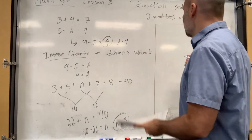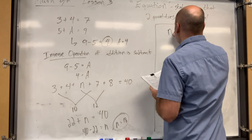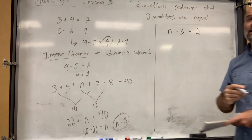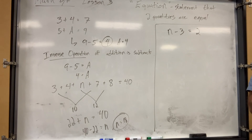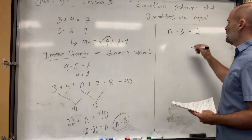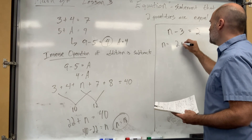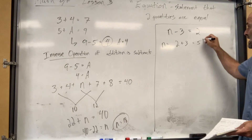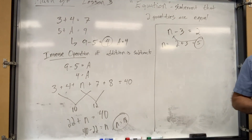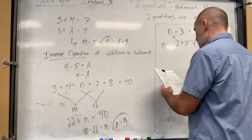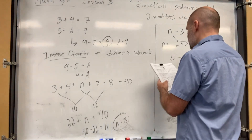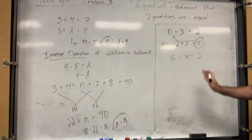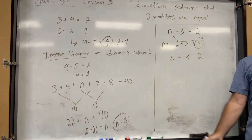In a subtraction problem, it depends. Let's start with an easy one: n minus 3 equals 2. How do you figure out what n is? You probably know it without doing any math, but if these were more complicated numbers — 2 plus 3. So n equals 2 plus 3, which is 5. And just make sure that makes sense: is 5 minus 3 equal to 2? Yes.